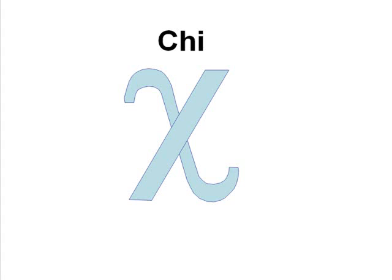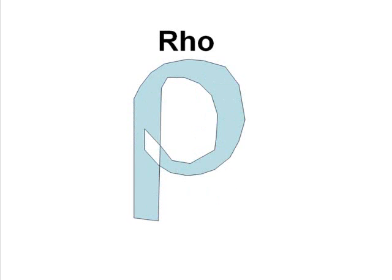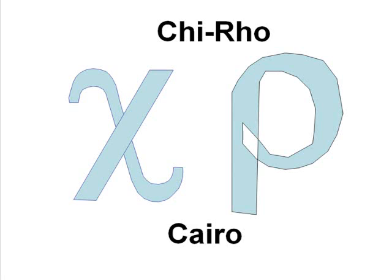I'm trying to think of a way to get you to remember that. Remember when we talked about correlations, we talked about rho. Rho looked like a fancy P, but it was actually the Greek letter R, spelled R-H-O, and pronounced rho. Well, if we put these two symbols together, we'll get chi rho, and it's pronounced like the city in Egypt — Cairo. It's also spelled C-H-I dash R-H-O.